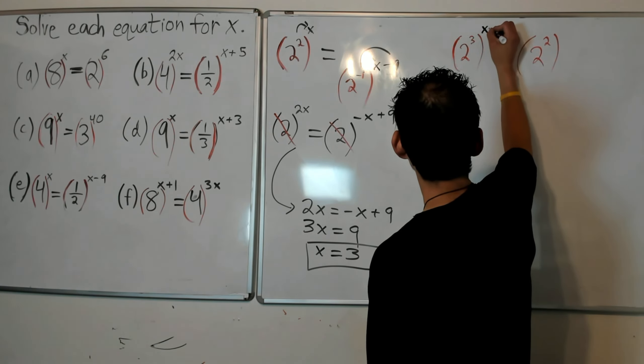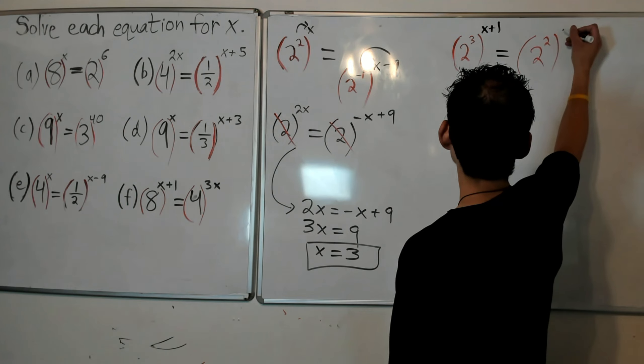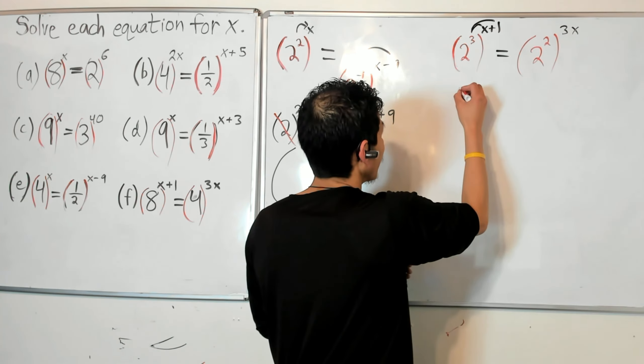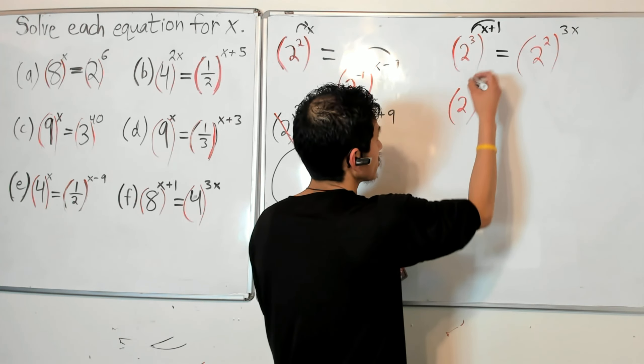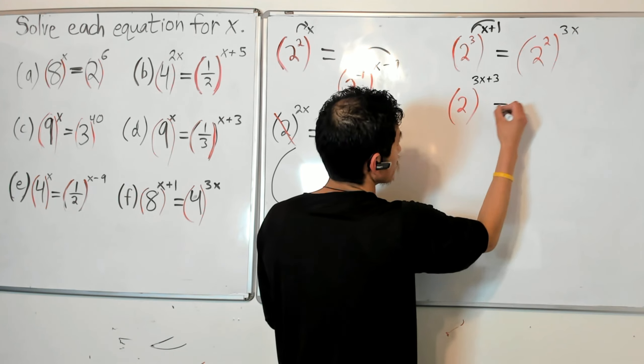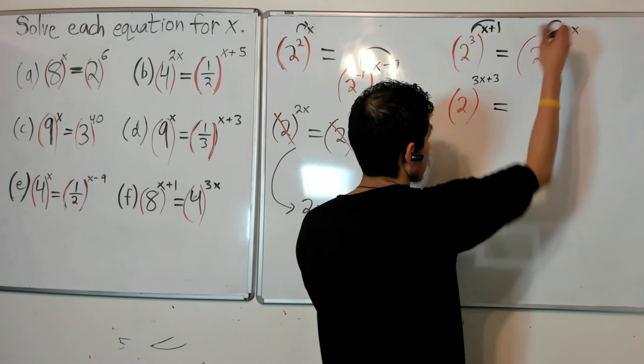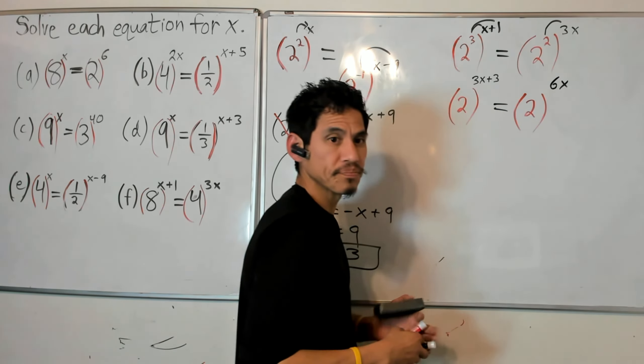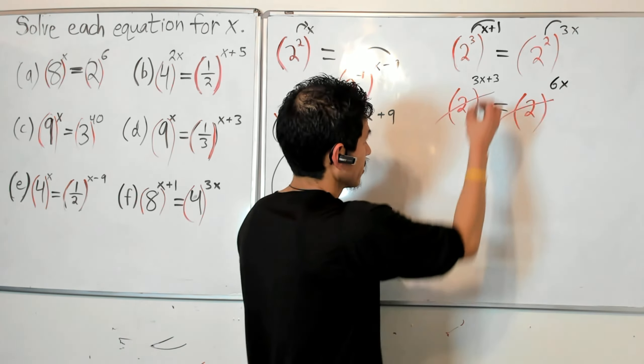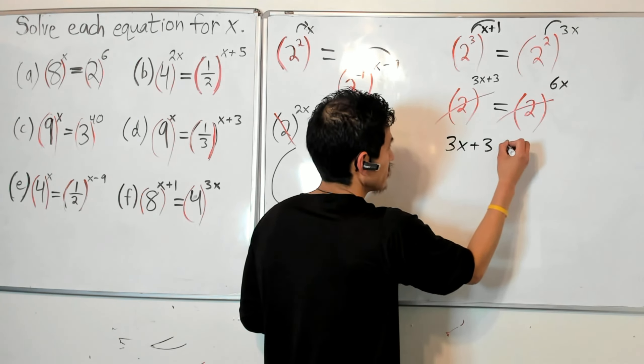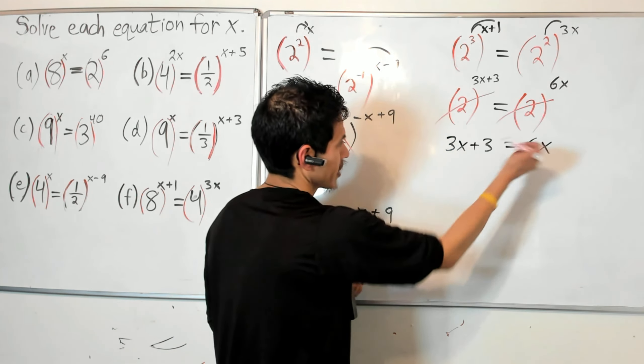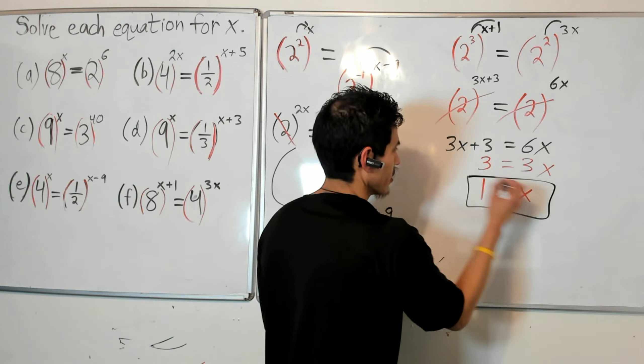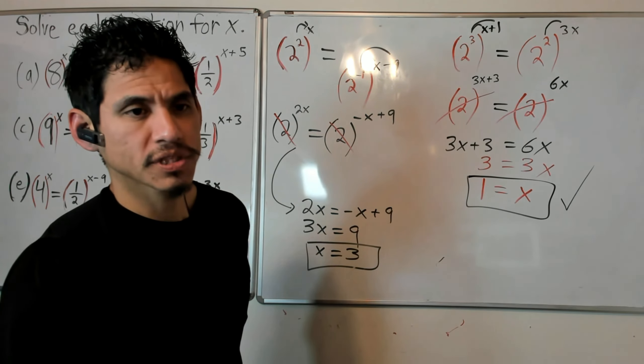So 2 cubed to the x plus 1 equals 2 squared to the 3x. I'm going to distribute, so 3 times x plus 1, I'll get 2 to the 3x plus 3 equals 2, on the right I just need to distribute that 2 to the 3x, so I just get 2 to the 6x. Bases cancel because they're both the same. I set my powers equal to each other. 3x plus 3 equals 6x. Take away 3x from both sides, I'll get 3 equals 3x, and then my answer is that x equals 1. Alright, so there you go. Hope that helps, goodbye guys.